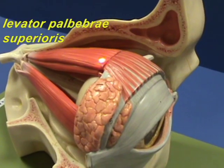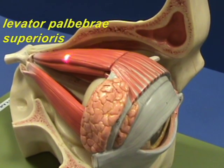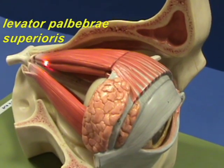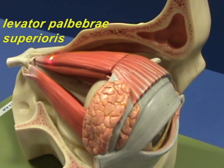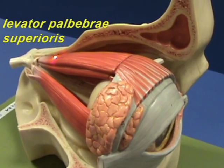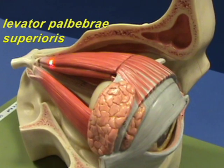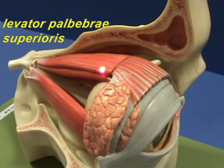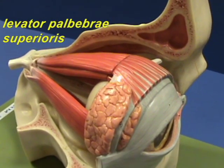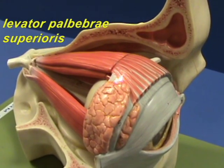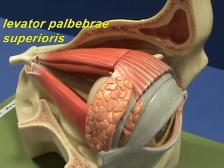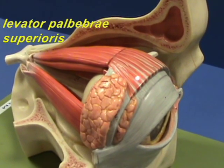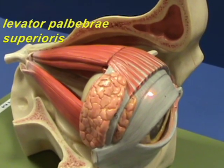The levator palpebrae superioris has an origin on the lesser wing of the sphenoid, anterior to the optic canal, and it inserts on the anterior dorsal plate. The action of this muscle is elevation of the upper lid.